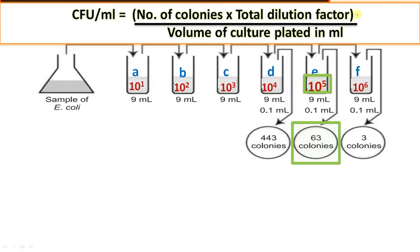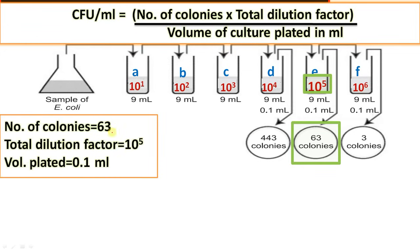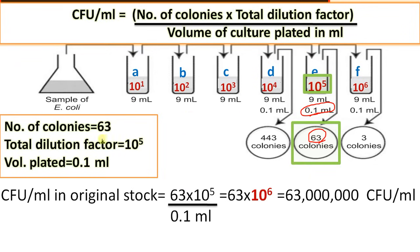Step three: CFU per ml of original stock equals number of colonies times total dilution factor divided by volume of culture plated in ml. Our data: number of colonies is 63, total dilution factor is 10^5. The volume plated is 0.1 ml — this is very important. From the 10 ml test tube we took only 0.1 ml, so this further dilution must be considered.